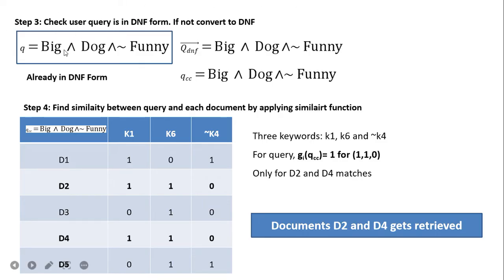The next query is 'big AND dog AND NOT funny.' This is already in DNF form, so this is the DNF and qcc part. We check keywords k1, k6, and k4. Since the query is 'big AND dog AND NOT funny,' the qcc is represented as (1,1,0) — big=1, dog=1, NOT funny=0. Here, 'funny' present is represented as 1 and 'NOT funny' as 0.